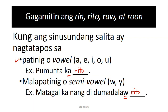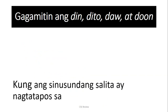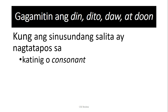So again, ang kailangan tandaan: kung vowel or semi-vowel — you have A, E, I, O, U, or W, or Y — it becomes R. Ano naman ang pagkakaiba sa D? Pag D — which is yung din, dito, daw, doon — you will use it kung ang sinusundang salita ay nagtatapos sa either a katinig or consonant. So you have all of your katinigs, all of the consonants — B, C (or K in Filipino), D, and so on. Kung yun ang sinusundan niya, it becomes letter D.